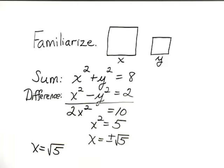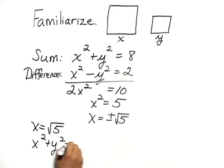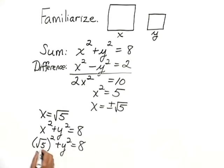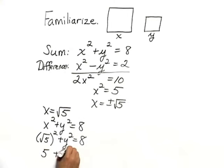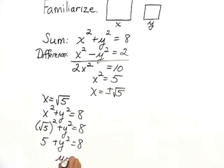Now, let's find out what the y value has to be. Well, we know that x squared plus y squared equals 8, which would give us the square root of 5 squared plus y squared equals 8. This is 5, so we have 5 plus y squared equals 8, so y squared has to be 3.